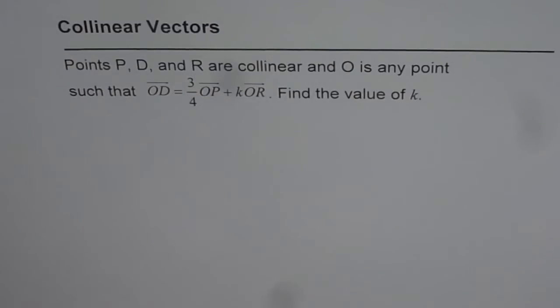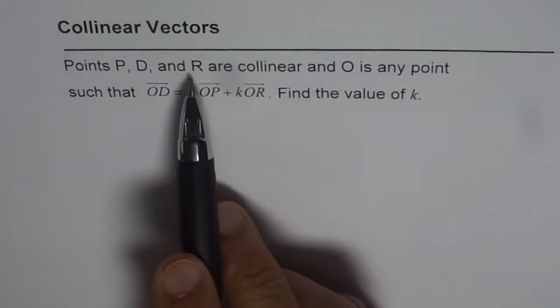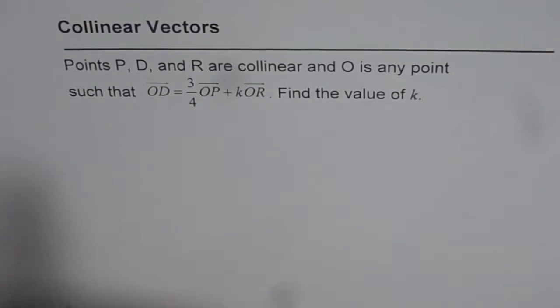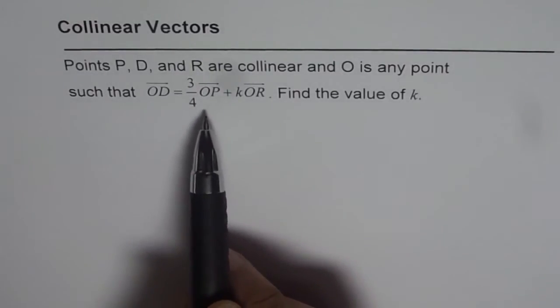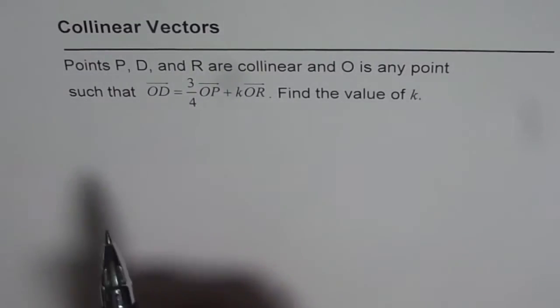We will apply what we have learned in the previous videos. If P, D, and R are collinear vectors, they can be written as OD equals 3/4 of OP plus k times OR.